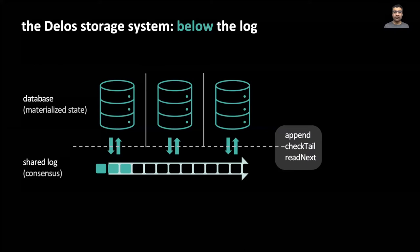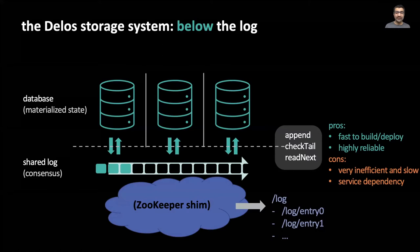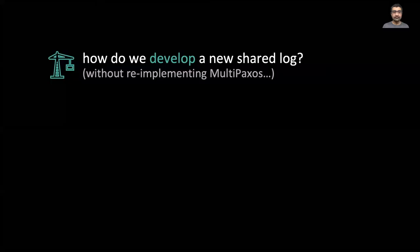A shared log design allowed us to hugely simplify Delos by outsourcing all the complexity of consensus to a shared log. But to deploy the system, we still needed an actual shared log implementation. In v1, we cheated. We used Zookeeper as our shared log by mapping log entries to keys. This enabled us to reach production really quickly, and it was a very reliable solution. However, due to the impedance gap between the log API and the Zookeeper API, it was a very inefficient and slow solution. Further, Delos was not zero dependency, which means that we did not satisfy our initial goal.